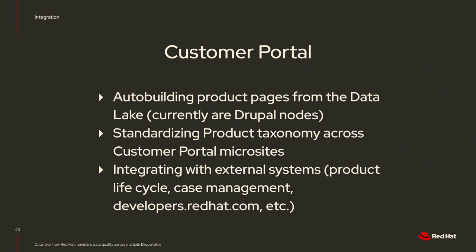The next set of work is to incorporate more teams — product lifecycle, which has a lot of product information like end-of-life data and documentation links; case management; and cross-pollinating data with developers.redhat.com and cloud.redhat.com. For example, pulling those things into the customer portal site and saying: 'You're using this product — did you know you can spin up a local and test it out on developers.redhat.com?' But those other teams would drive that data since they own it. That's how they can have complete control over the experience of their customers.